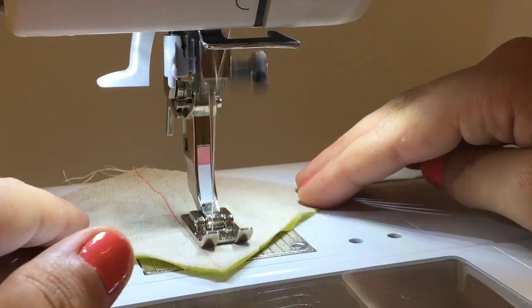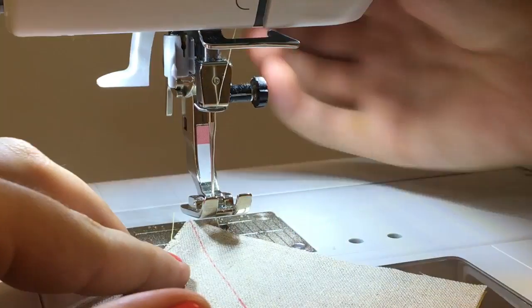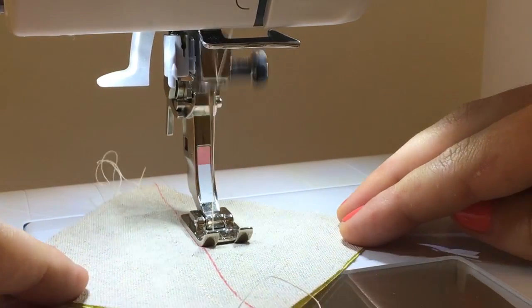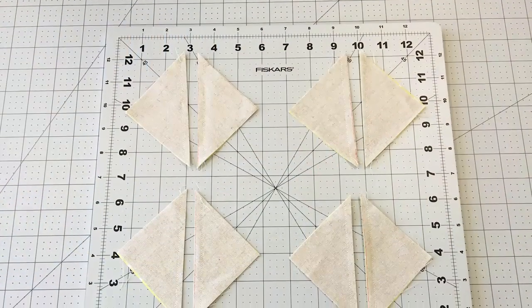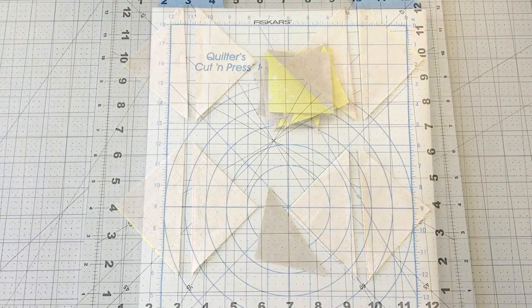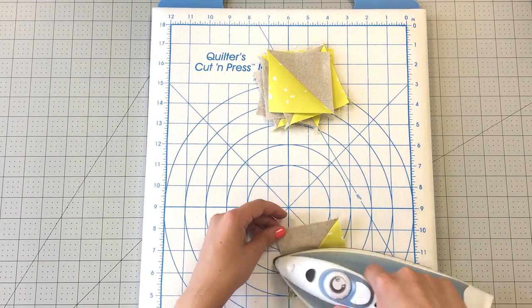Sew at one fourth inch on each side of your line. With a rotary cutter, cut the piece in half on the line you drew. Press to set the seam allowance. Open the piece and press seam to one side.